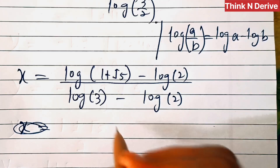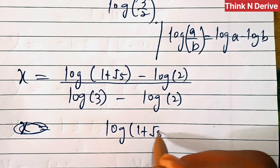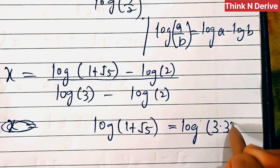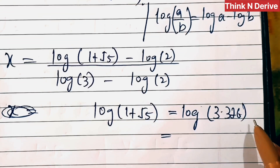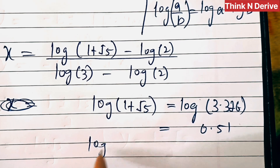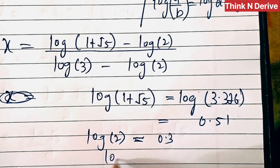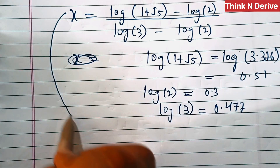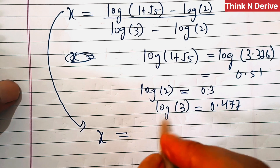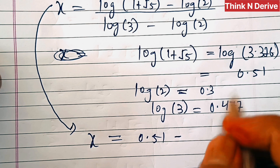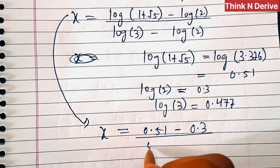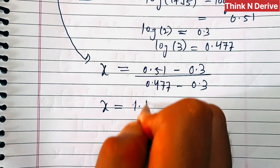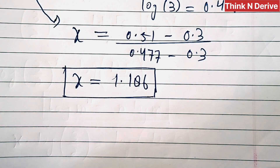Now we calculate these values. Log of (1 plus root 5) is approximately log(3.236), which is approximately 0.51. Log of 2 is 0.3, and log of 3 is 0.477. So x equals (0.51 minus 0.3) over (0.477 minus 0.3), which gives x approximately equal to 0.186. This is the final solution of the given problem.